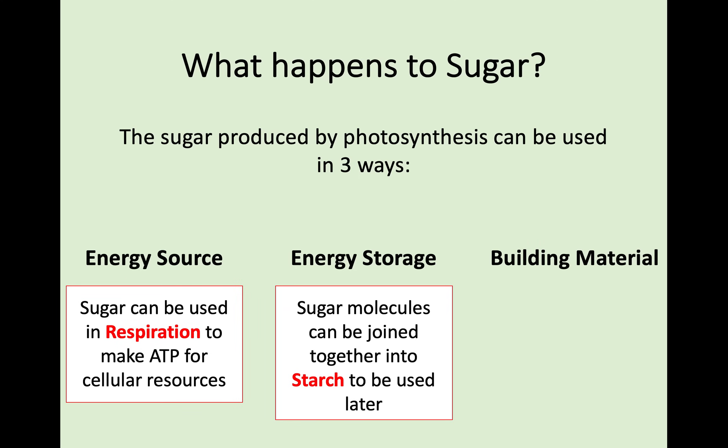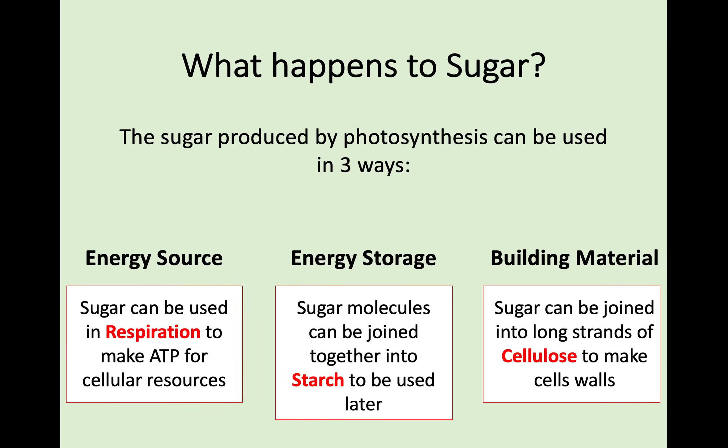The final way that sugar can be used is as a building material in order to make parts of the plant, for the plant to grow and to survive. In this form, sugar is turned into long strands of cellulose. Hopefully you remember that cellulose is the main carbohydrate component of cell walls. So you need to know not just that sugar is made by photosynthesis or how the sugar is made, but what that sugar can then be used for. Remember: energy source, storage, and building material — with respiration, starch, and cellulose.